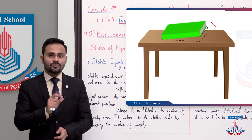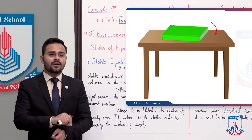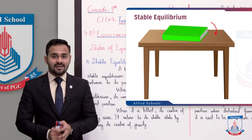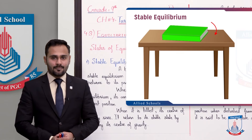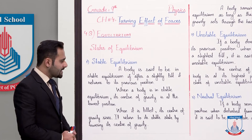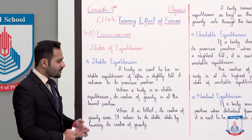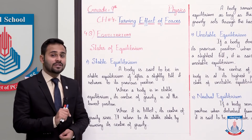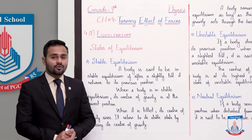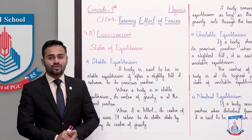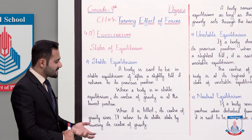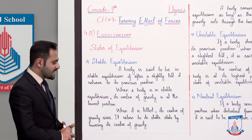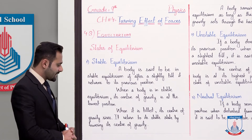So that is stable equilibrium. When a body is in stable equilibrium, its center of gravity is at the lowest position. And when it is tilted, its center of gravity rises, and it returns to its stable state by lowering its center of gravity.